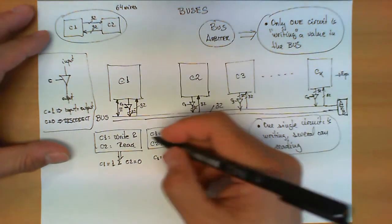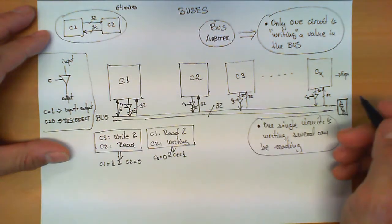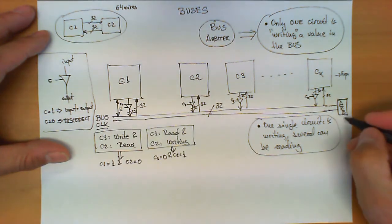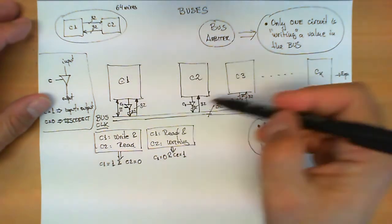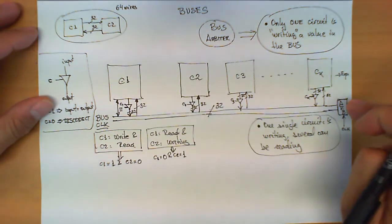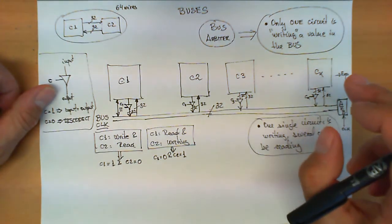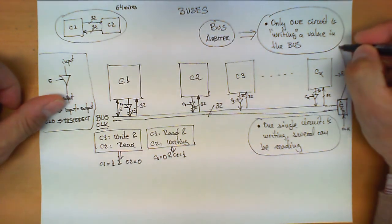Typically what happens when all these circuits have to be put synchronously working in this bus is that we have an extra signal, which is never drawn when we draw a bus, but it is always present, which is the clock. The clock, which also is used by the arbiter, is this signal that allows all these circuits to make requests to the arbiter to write a value in the bus, and the arbiter will grant those requests in a one-by-one basis so that this rule is always enforced.